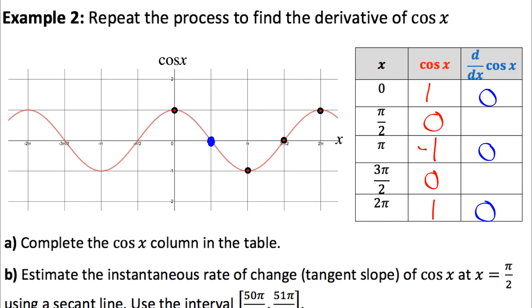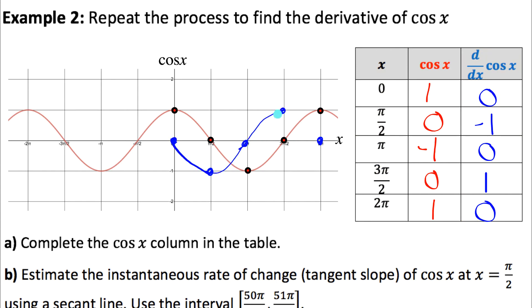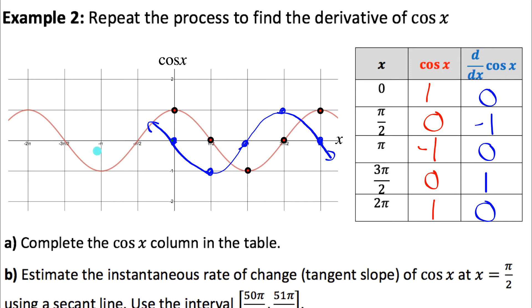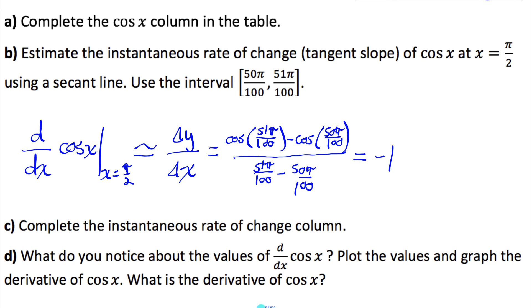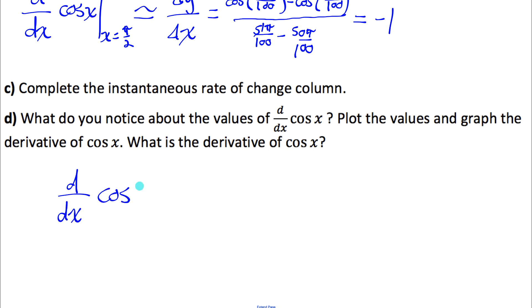So the derivative at pi over two is negative one, and by symmetry the slope at three pi over two is probably one. If we graph the derivative of cos x by plotting these points — (0, 0), (pi/2, -1), (pi, 0), (3pi/2, 1), (2pi, 0) — this looks like a sine function that's been vertically reflected. A normal sine function not vertically reflected looks like this, and our blue function is a vertical reflection of it. So the derivative of cos x equals negative sine x.